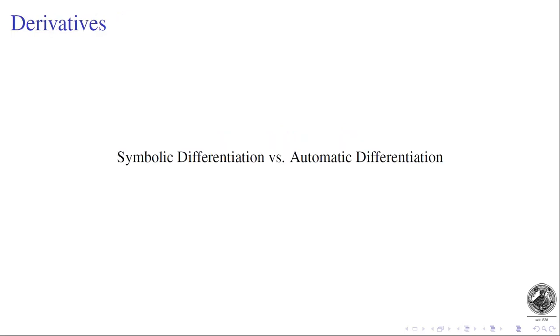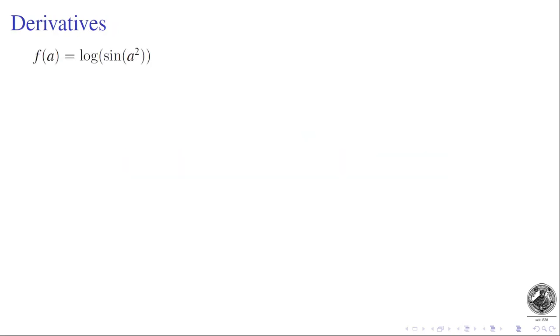Let me walk you through the algorithmic details and also give my personal view on the connection between symbolic and automatic differentiation. To illustrate the difference, let's work in the scalar case first — A is scalar and those are all scalar functions.